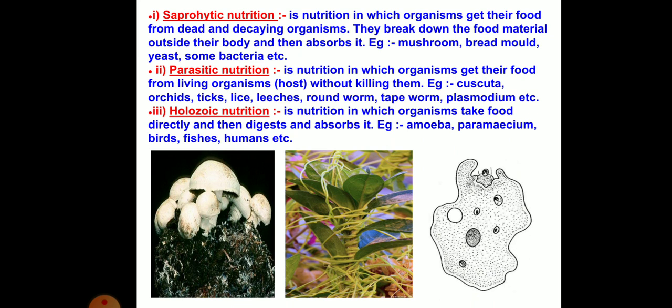Holozoic nutrition is the nutrition in which organisms take food directly and then digest and absorb it. Examples include amoeba, paramecium, some birds, fishes and humans.